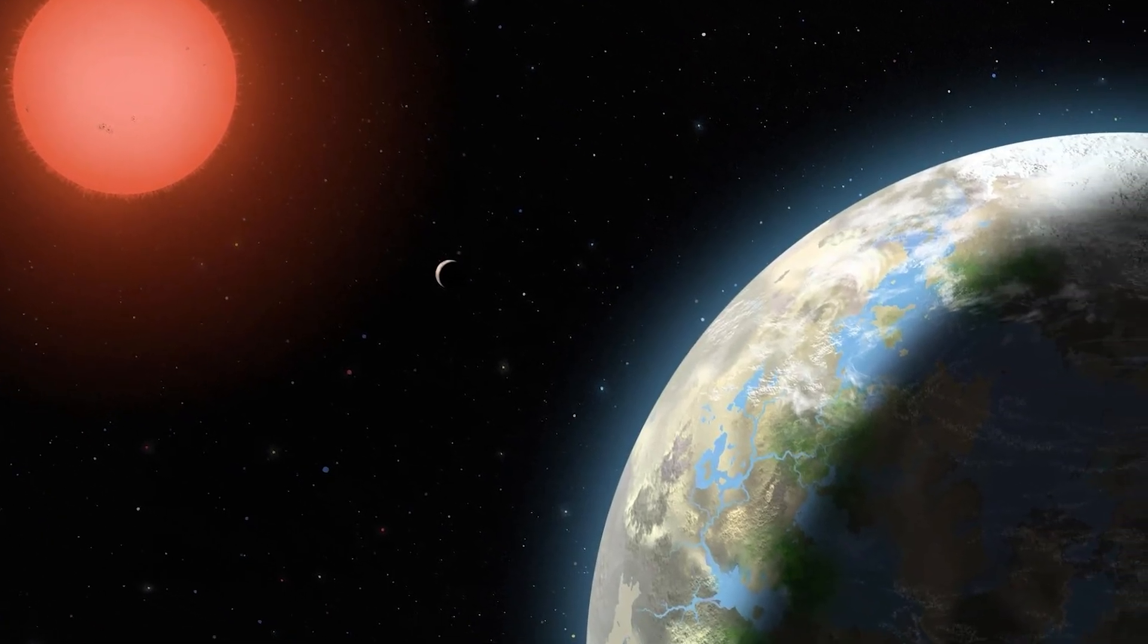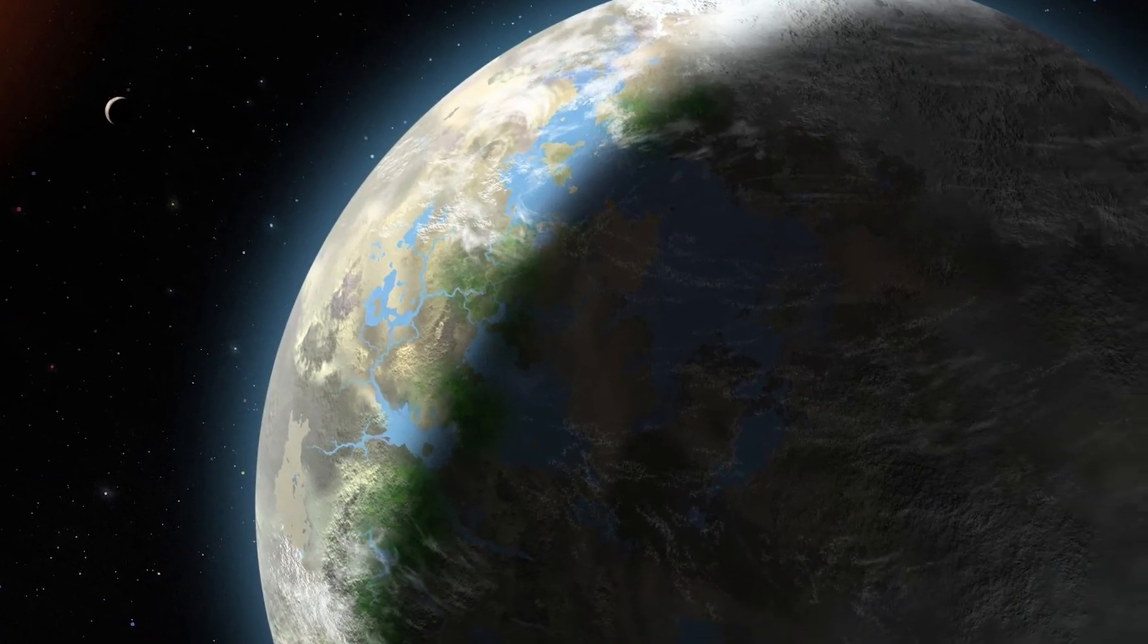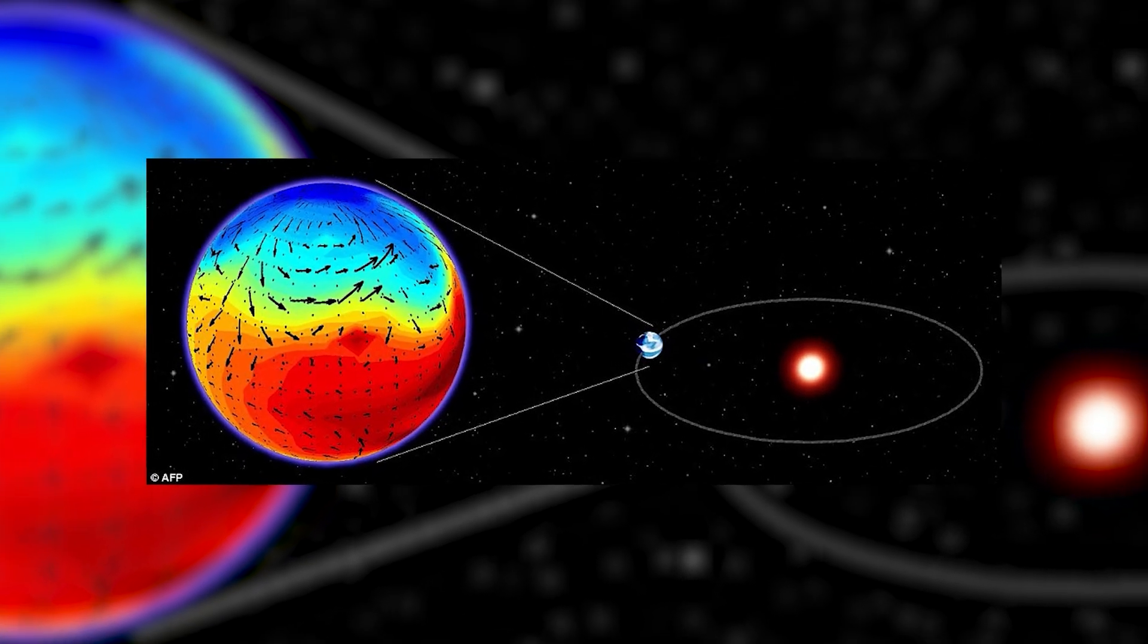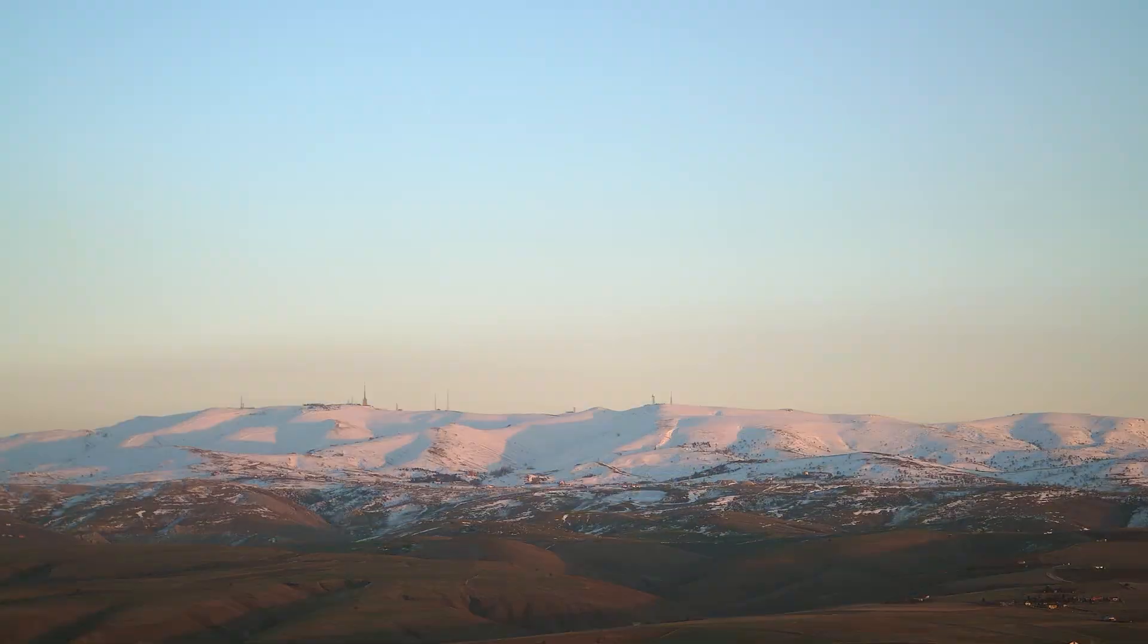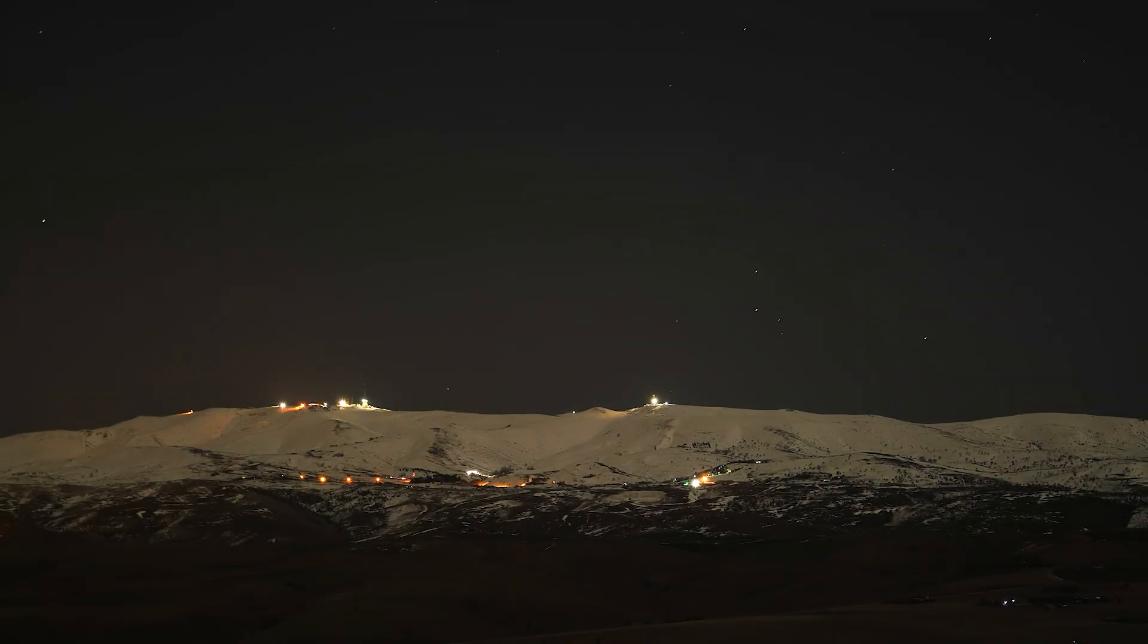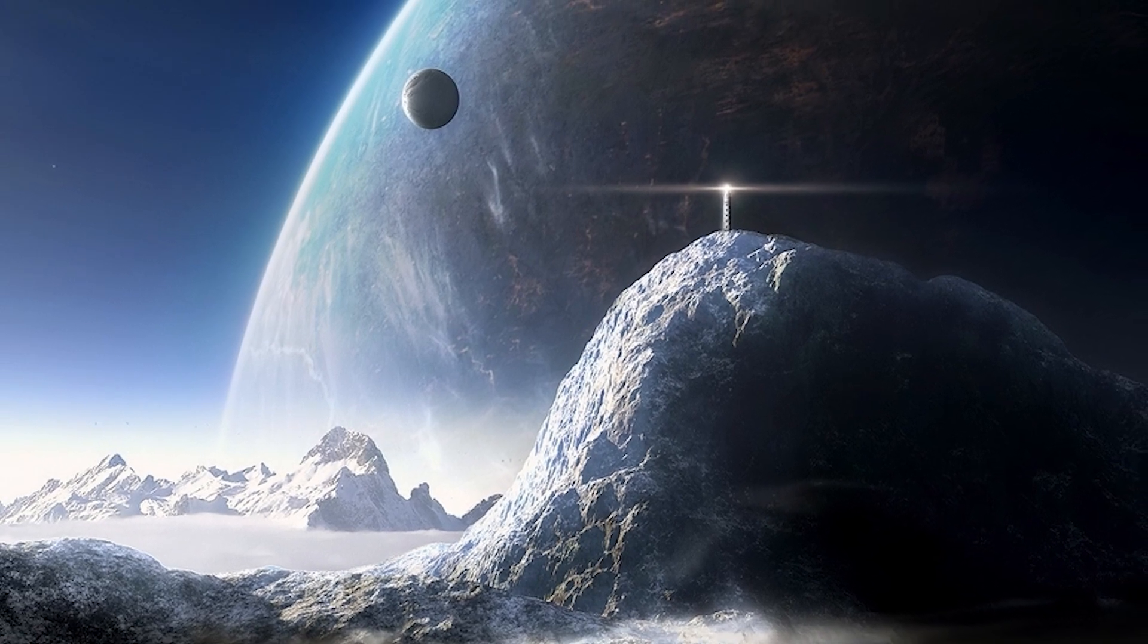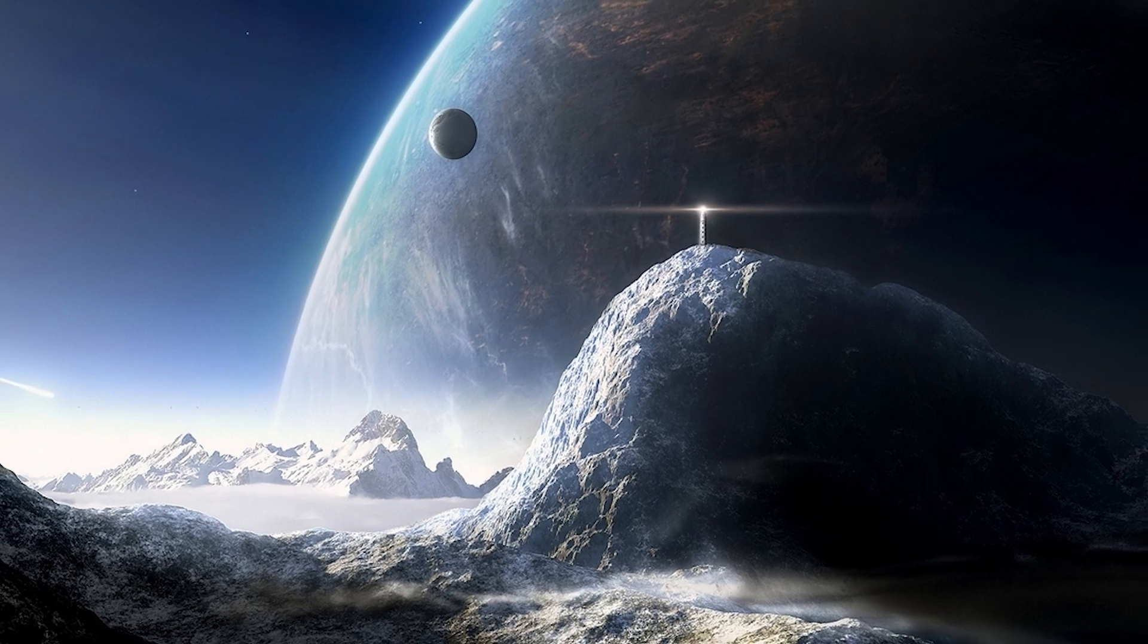However, one side of Gliese 581d always faces the star, and the other side remains cooler. But here's the twist. The planet has lots of carbon dioxide in its atmosphere, which might prevent the night side from getting too cold. On Earth, we're used to the regular cycle of day and night, and most living things here have adapted to that. But it's uncertain if life could adapt to the conditions on Gliese 581d if we ever try to live there.